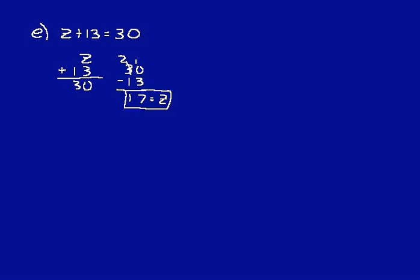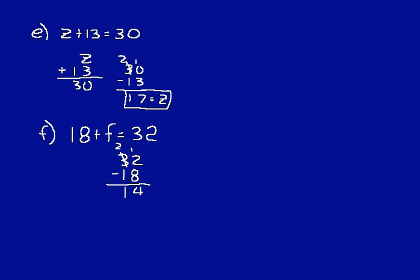The best way to do these problems is in your head because they're usually pretty simple. If you have to write it out, do that — I'm writing it out just in case you don't understand how to get the answer. Let's try: 18 plus f equals 32. You can say 18 plus 14 is 32, or do subtraction: 32 minus 18. 12 minus 8 is 4, 2 minus 1 is 1, so f equals 14.